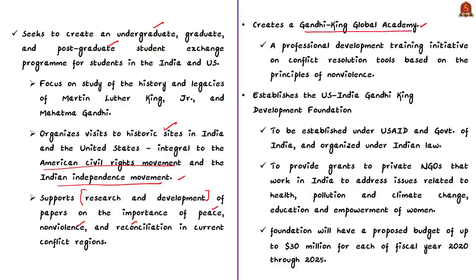The act will create a Gandhi-King Global Academy — a professional development training initiative on conflict resolution based on principles of non-violence, for which both leaders are known. It will focus on the success of non-violent movements and inclusion in conflict resolution. Another important provision is to establish the US-India Gandhi-King Development Foundation, to be set up by USAID — the US Agency for International Development — and the Government of India, organized under Indian law.